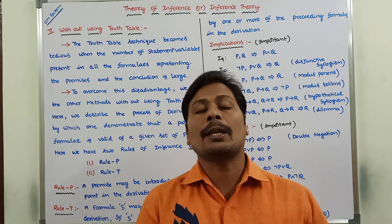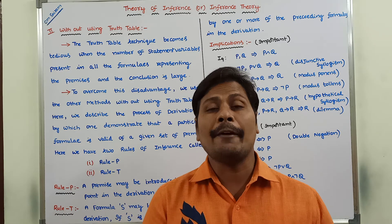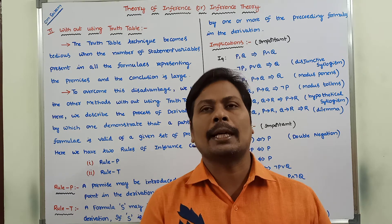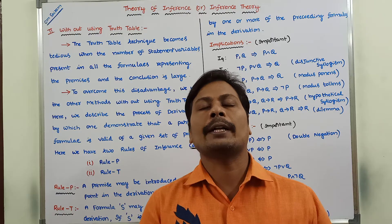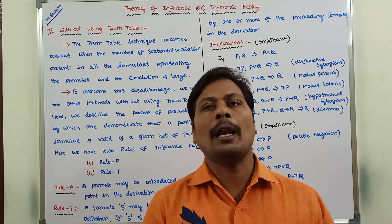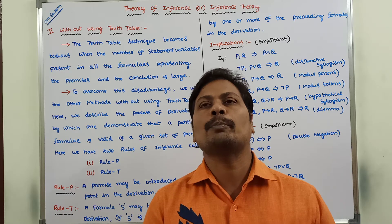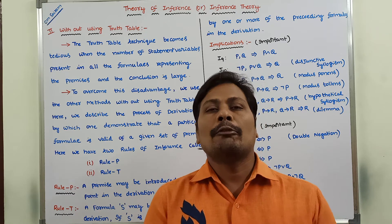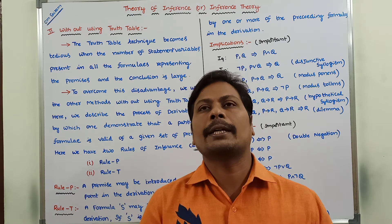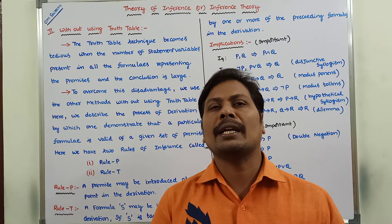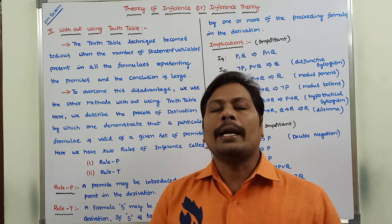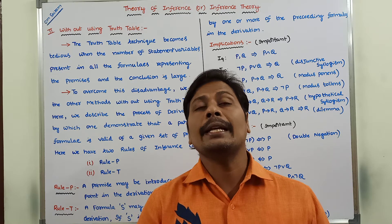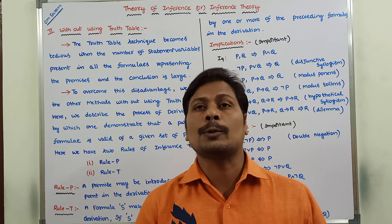So why are we going without using the truth table method for deriving the conclusion from the given premises? First, we have to learn about that reason. What is the limitation of the truth table method for deriving the conclusion from the given premises? If the premises and conclusion contain more number of statement variables, then it is very difficult to construct the truth table.